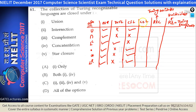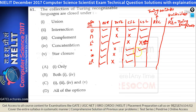CSL languages are closed under union, intersection, and complementation — though complementation is an open problem: neither confirmed closed nor confirmed not closed. CSLs are closed under concatenation and Kleene star. Recursive languages are closed under all operations.